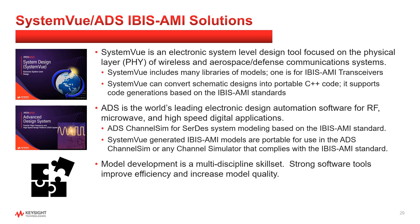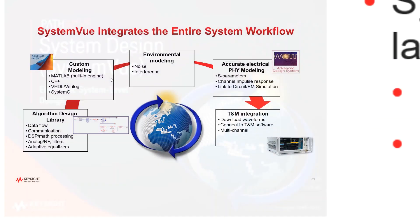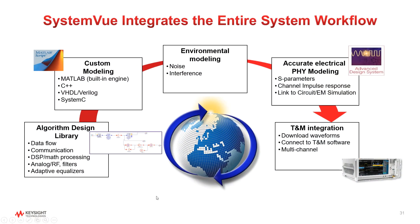SystemView is a software platform tool to help you focus on the physical layer model. It has many library options, one of which provides algorithmic elements for IBIS-AMI transceivers. SystemView is essentially a digital signal processing workbench with built-in design libraries for environmental, electrical, and custom modeling. It has a library of different functions and filters that can be combined in many different ways to construct an IBIS-AMI model. Once your SystemView schematic and analysis is performed to your requirements, there is a C++ code generation option that automatically generates your IBIS-AMI DLL and AMI file.